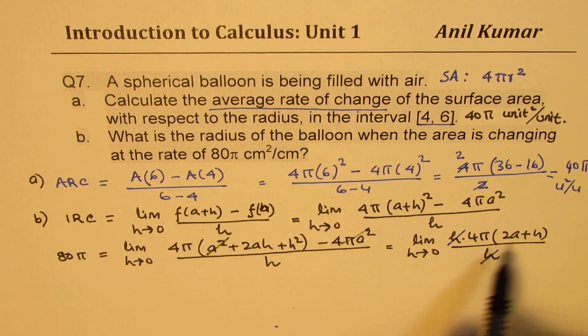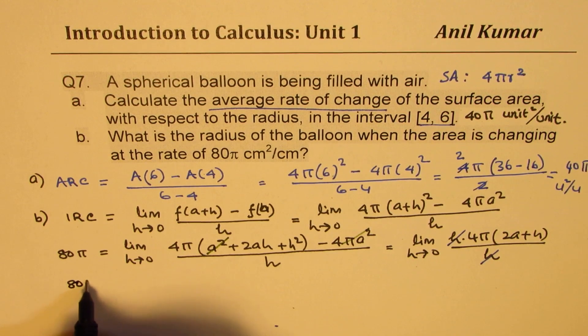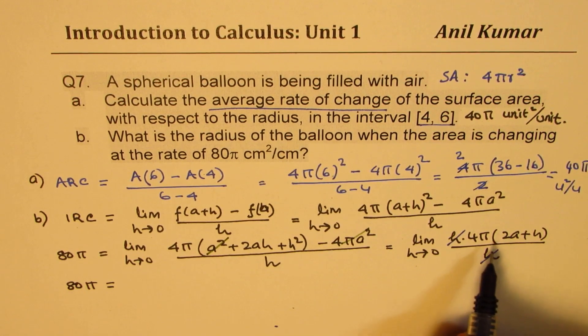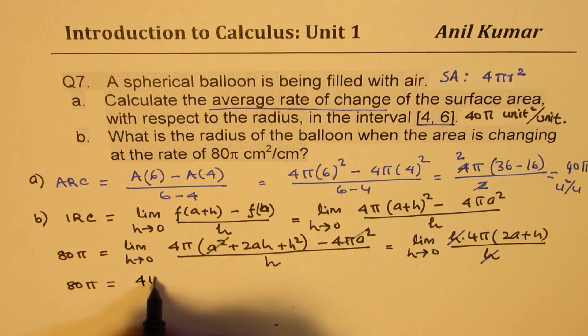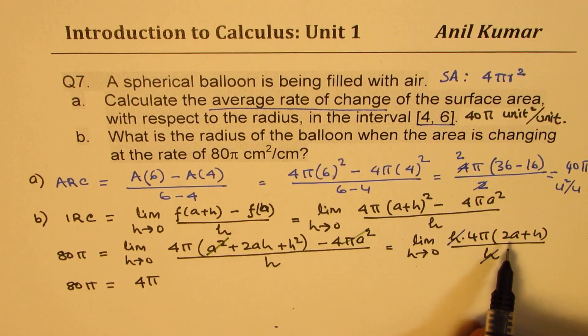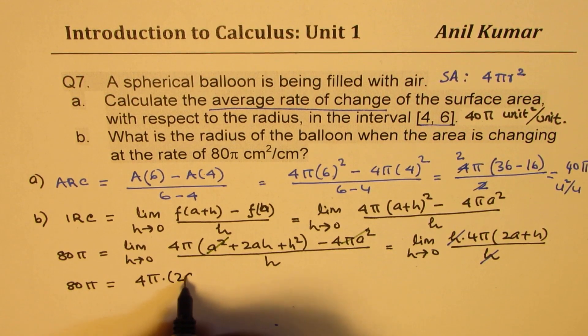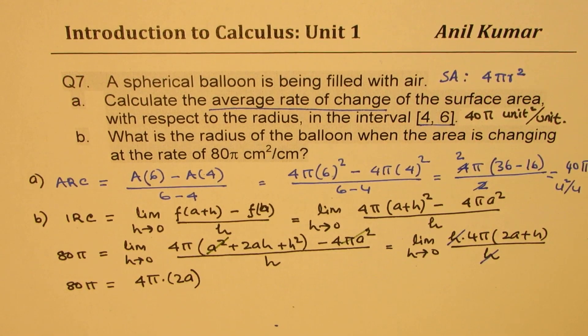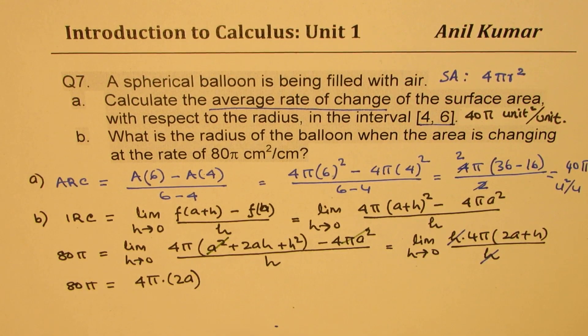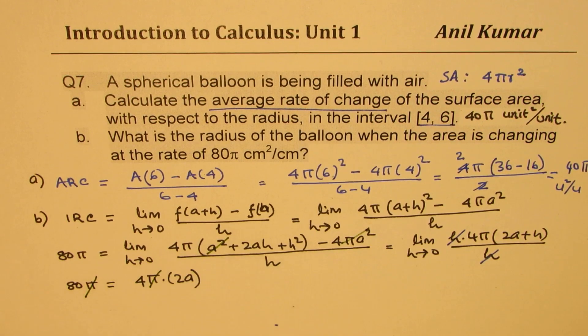Now we can substitute h equals to 0, so we get 80π equals to 4π times 2a. This becomes 0, into 2a. Now solving this we can find the value of a. π and π cancel.